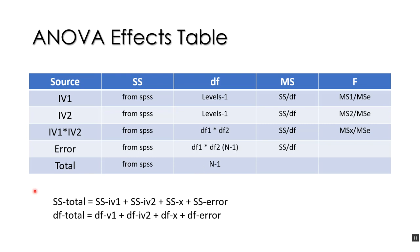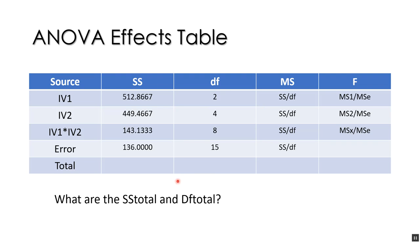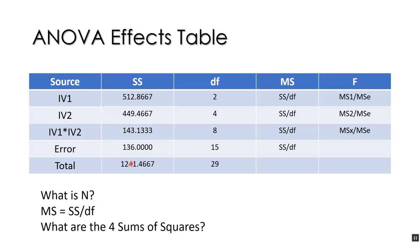We can think about sum of squares and degrees of freedom this way: if we take the sum of squares from IV1, IV2, the interaction, and error, they should all add up to the total. Likewise, the degrees of freedom add up to the total. For example, total degrees of freedom: take 15 plus 8 plus 4 plus 2 and add that up. The sum of squares you just add up those numbers to get your total sum of squares — in this case 29.